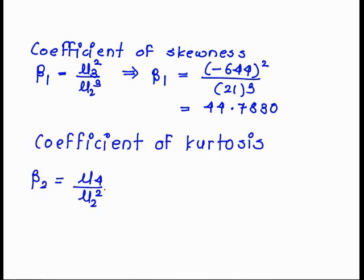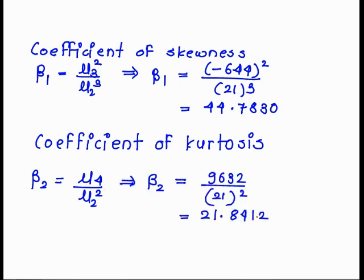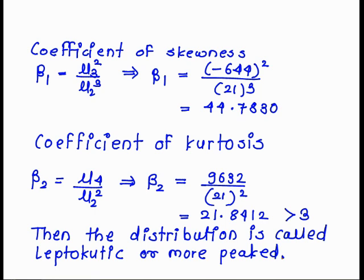The coefficient of kurtosis beta 2 is equal to mu 4 upon mu 2 squared. After substituting the values of mu 4 and mu 2, we get beta 2 is equal to 21.8412, which is greater than 3. Therefore this distribution is called leptokurtic or more peaked. Remember: when beta 2 is greater than 3, the distribution is leptokurtic or more peaked.